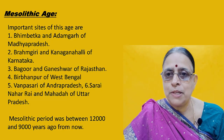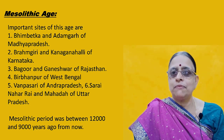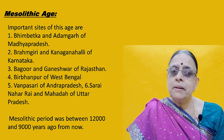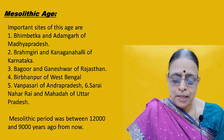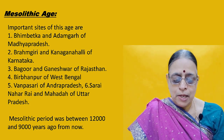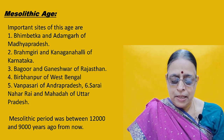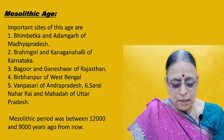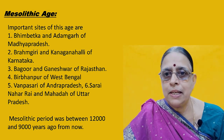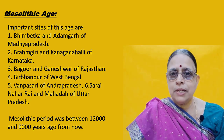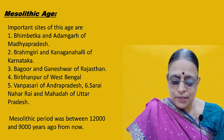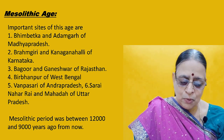Some improvements and developments were made during this period. Now let us look at some of the locations of the Mesolithic Age: Brahmagiri and Kanagana Halli in Karnataka; Bhimbekta and Adhamgari in Madhya Pradesh; Bagur and Ganeshwar in Rajasthan; Bairampur in West Bengal; Vanapasari in Andhra Pradesh; Sarai Nahar Rai in Uttar Pradesh. Historians are of the opinion that the Mesolithic Age existed between 12,000 to 9,000 years ago.